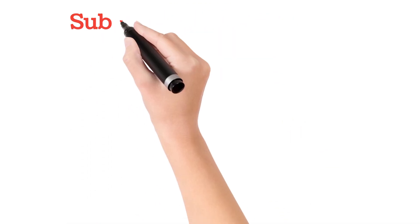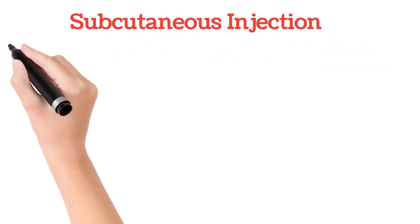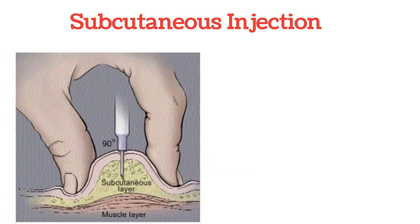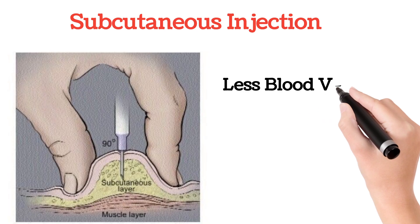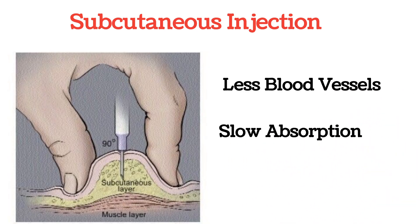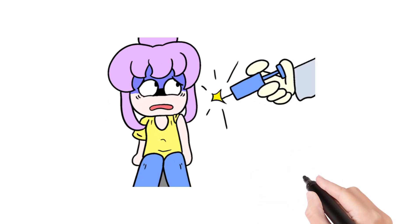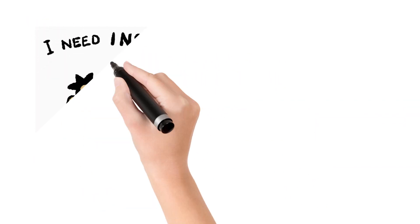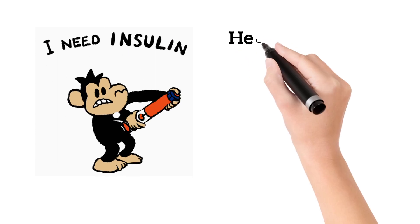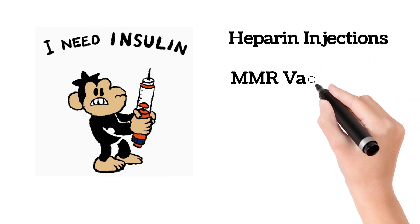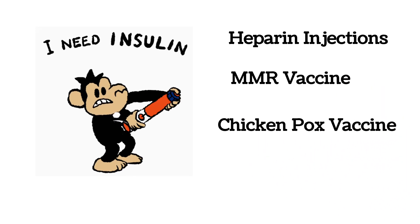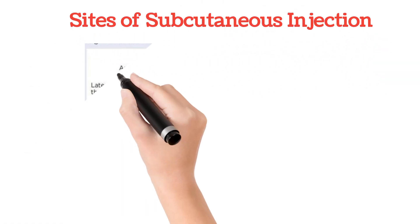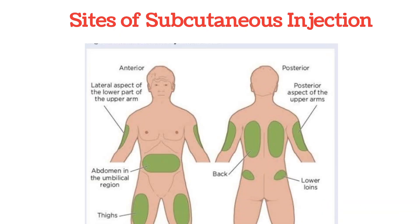Next comes the subcutaneous injection. In this, the medicine is injected into the subcutaneous tissue. In the subcutaneous tissue there is more fat and fewer blood vessels, so medicine absorbs slowly and the response is delayed. The injection needle is smaller so it is less painful. Subcutaneous injections are given for insulin for diabetes, blood thinners like heparin, MMR vaccine, and chickenpox vaccine. It is given on the outer or back of the upper arm, front or outer side of the upper thigh, and belly area.